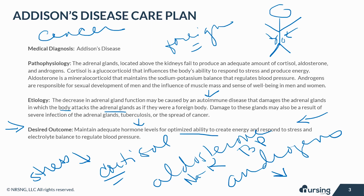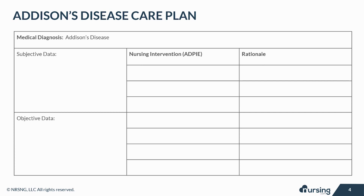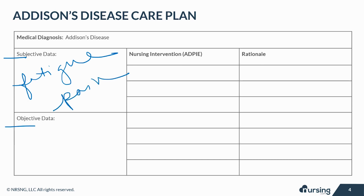Let's take a look at some of the subjective and objective data that your patient with Addison's disease may present with. Remember, subjective data are things based on your patient's opinions or feelings. These may include fatigue, lower back or leg pain, abdominal pain, irritability or depression, and reports of significant weight loss.